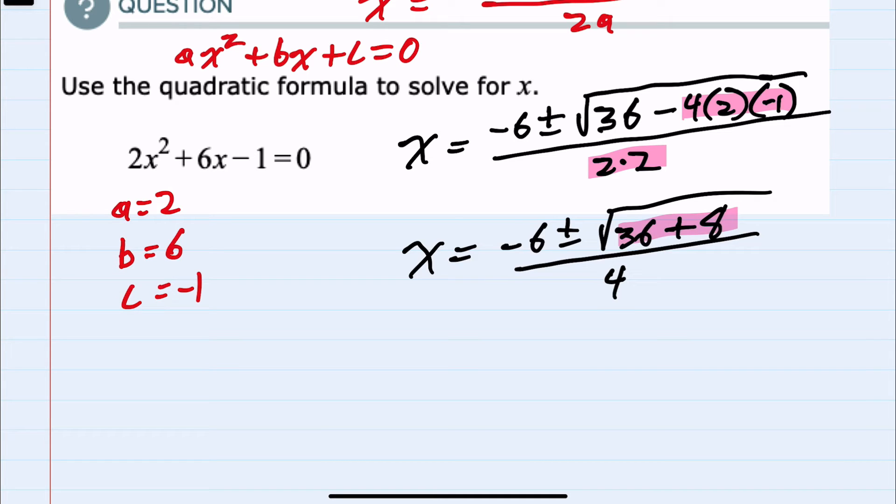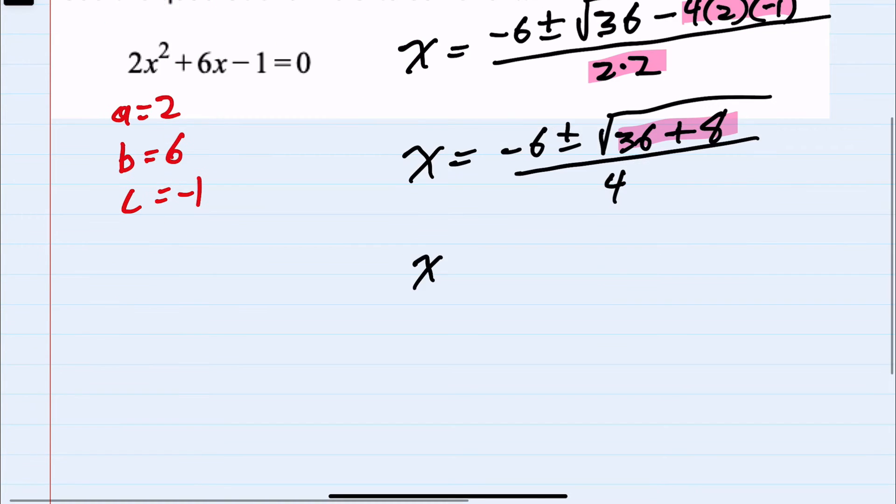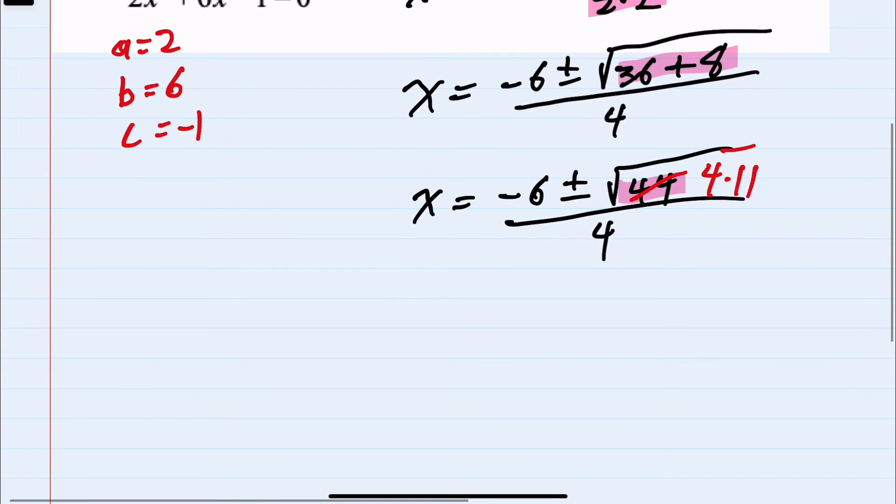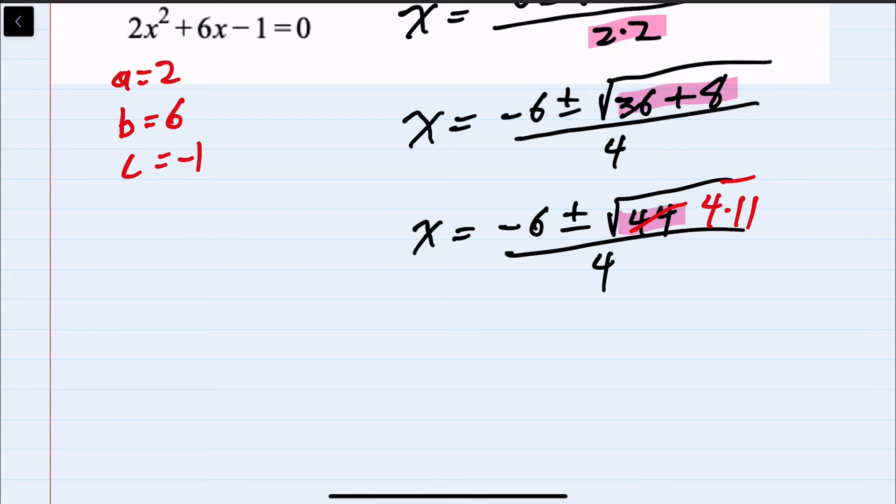Then I can simplify the radical and say that x equals negative 6 plus or minus the square root of 44 over 4. And then the radical 44, I can rewrite 44 as 4 times 11. And that would allow me to bring the 4 out because the square root of 4 is 2.